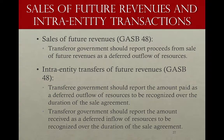Statement 65 amends GASB Statement 48 on sales of future revenues and receivables by saying that for sales of future revenues to an entity outside of the government, the government should report the proceeds it receives from that sale as a deferred outflow of resources, and then recognize that as revenue over the life of the agreement.